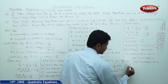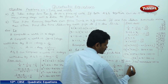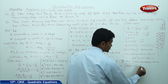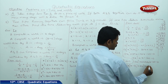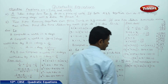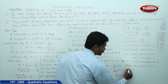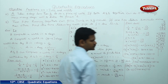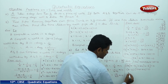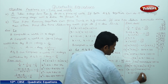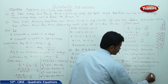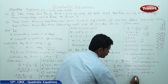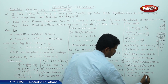From the factors: X minus 5 equals 0 gives X equals 5, and 13X plus 24 equals 0 gives X equals minus 24 by 13.